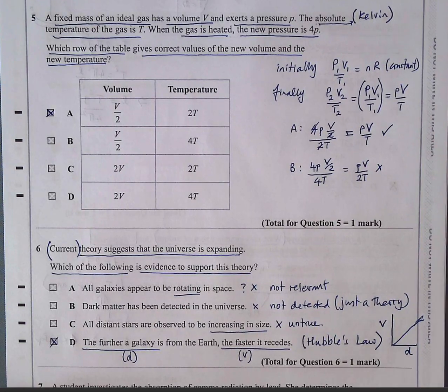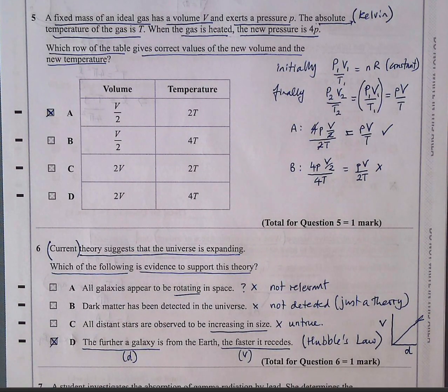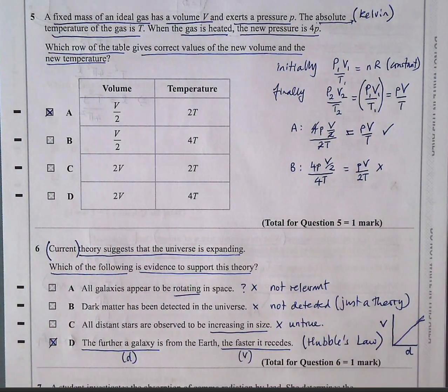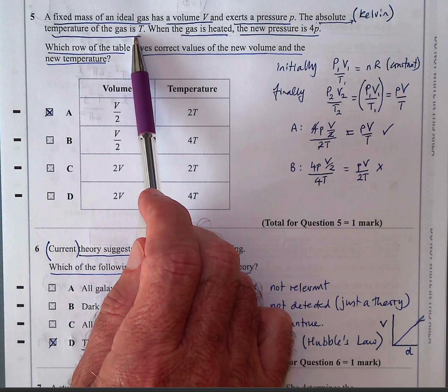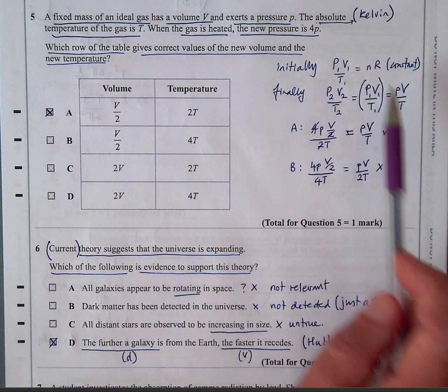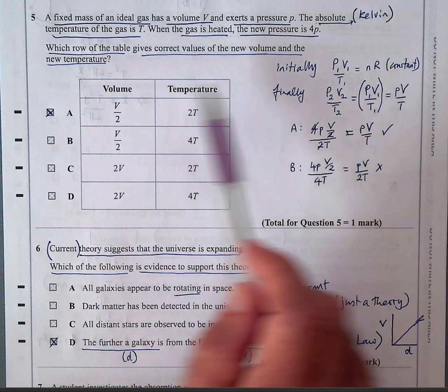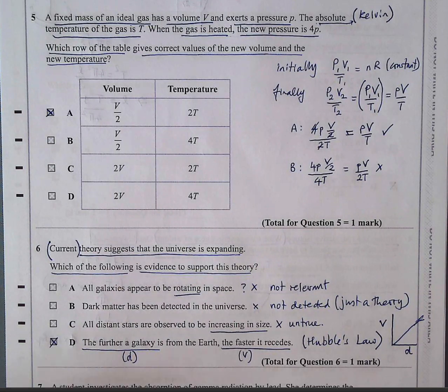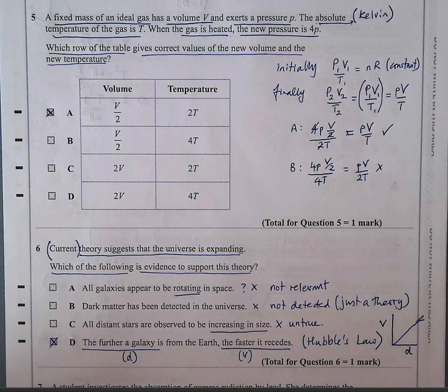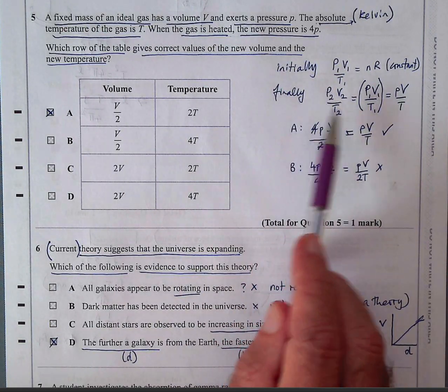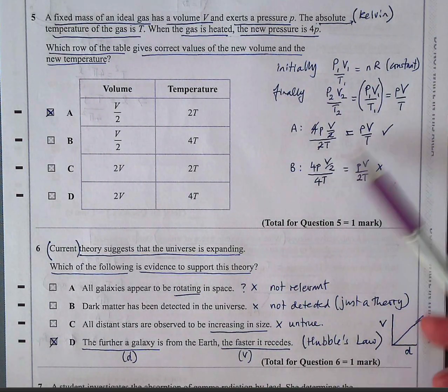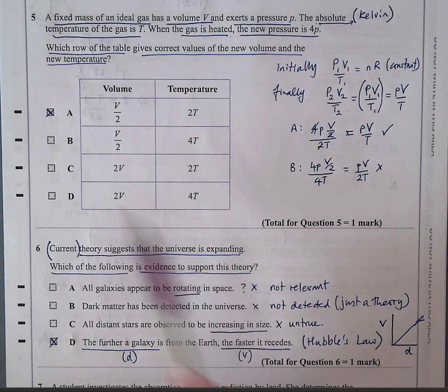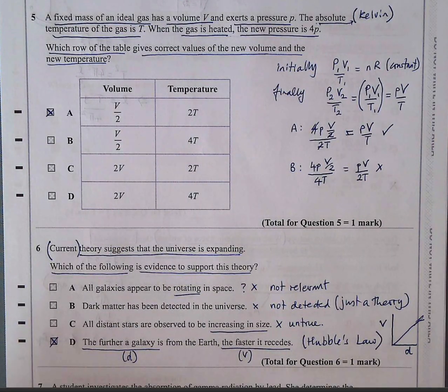Question five is looking at a fixed mass of an ideal gas, which has a volume V and exerts a pressure P. The absolute temperature, that means in Kelvin, of the gas is T. When the gas is heated, the new pressure is 4P. So that means you know that P1 V1 over T1 is a constant. And if you do that, you will be able to see that P2 V2 over T2, the final value, will be equal to P1 V1 over T1, because PV over T is a constant. If you do that, put the numbers in, you'll be able to follow my algebra. You'll see the only one that fits is A5.